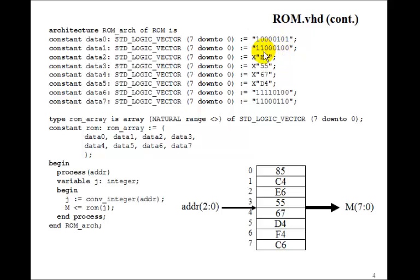Or we could list them as hex numbers. Hex, remember, is X, quote, E6, 55, 67, D4. Here's F4 written in binary, C6 written in binary. So these are the constants that are going to get stored in here.